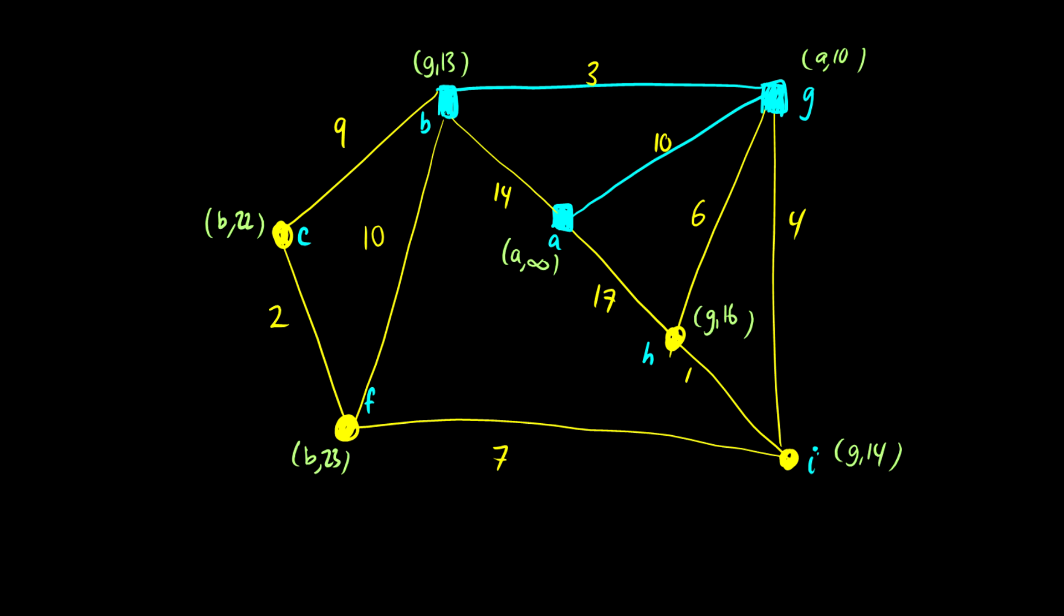So now we need to take a look at all of our information here. So we have a 16, a 14, a 23, and a 22. Well, 14 is the lowest number, so we should go to I from G, because it says 14 is the smallest distance to our next vertex, and it's coming from G. So we'll put a line there. So now we can go to the next step, and fix in this information once again. So that should be G and 16.